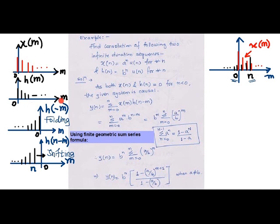The impulse response is further folded to obtain h(-m). After the folding operation, we find out h(n-m), which is the shifted form of h(-m).